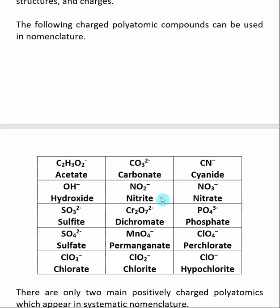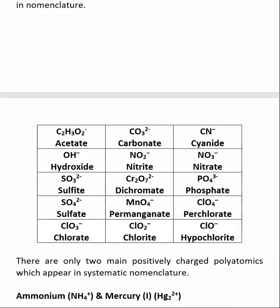You need to find out what the list is for the class that you are currently taking, because there may be more or even less. And you can see it is just a combination of elements with a defined charge. So acetate is C2H3O2 minus. Dichromate is Cr2O7 2 minus. They're just a combination of two or more elements with a defined charge.